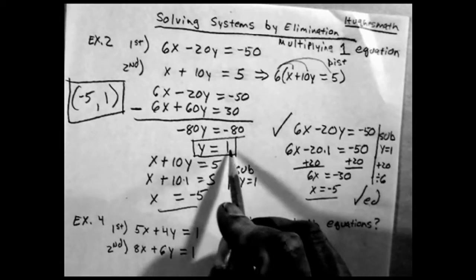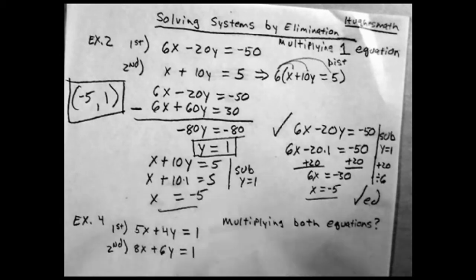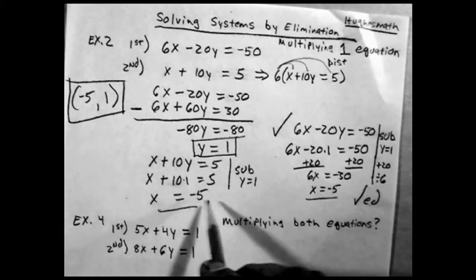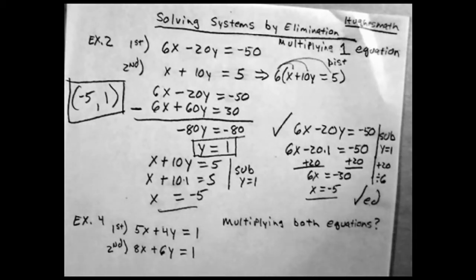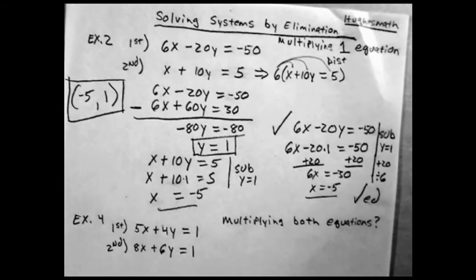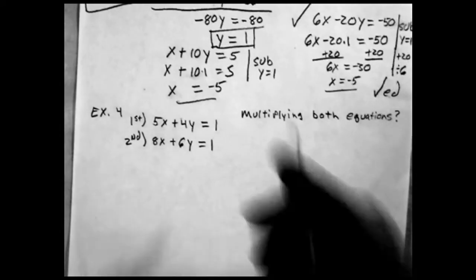Got y by itself, then I plugged y into this equation to get negative 5, and I checked it with the second equation. Okay, next one, multiplying both equations. Put a question mark there because there's a faster way.